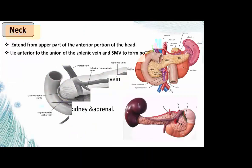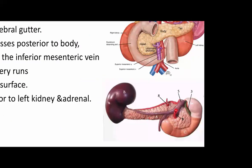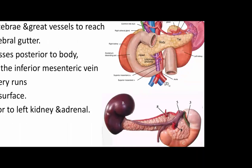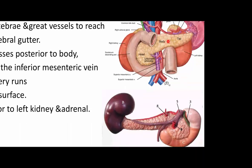The body crosses over the vertebra and great vessels to reach the left hypochondrium. The splenic vein runs posterior to the body of the pancreas, where it receives the inferior mesenteric vein. The splenic artery runs over the upper body and lies anterior to the left adrenal and left kidney.